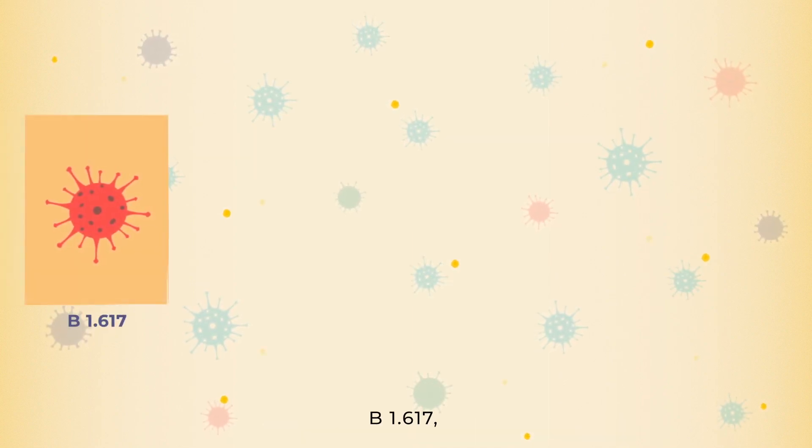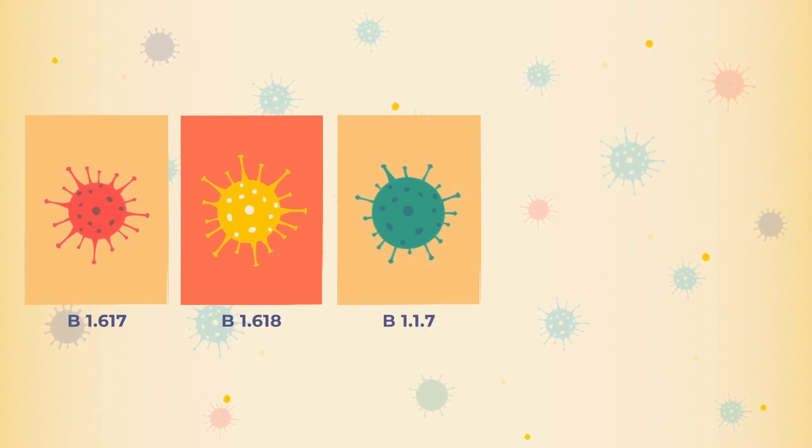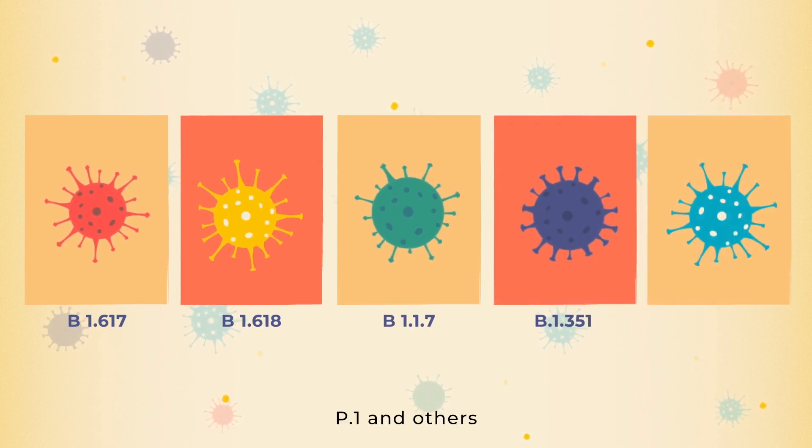The variants are called by code names such as B.1.6.1.7, B.1.6.1.8, B.1.1.7, B.1.3.5.1, B.1, and others.